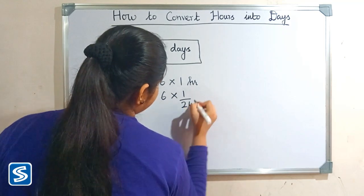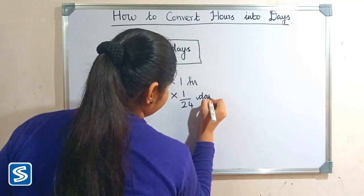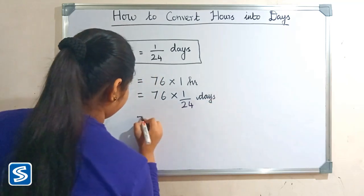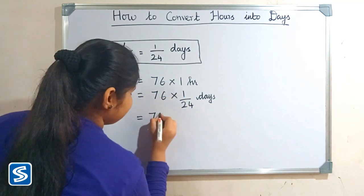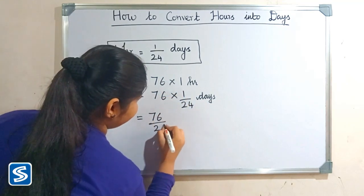by 24 days. So 76 multiply one will be 76, so 76 by 24 days.